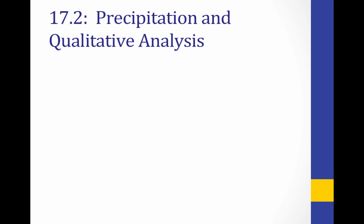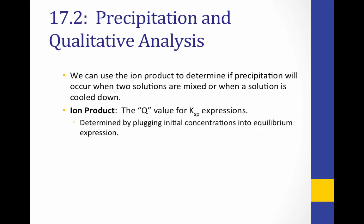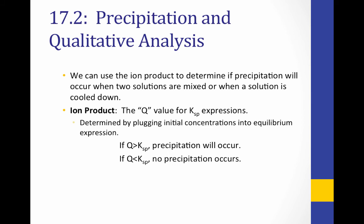Finally, we can use KSP to predict whether precipitation will occur at a given temperature or when two solutions are mixed. We do this using the ion product, which is the Q value for KSP expressions — just like the Q we used before. We plug initial concentrations into our equilibrium expression and compare Q to K. If Q is greater than K, there are too many ions in solution and they will precipitate to form a solid. If Q is less than K, the solution is unsaturated and no precipitation will occur. If Q equals K, we are at equilibrium and the solution is saturated.